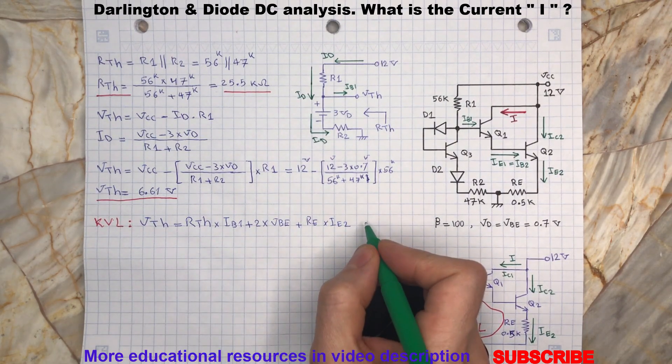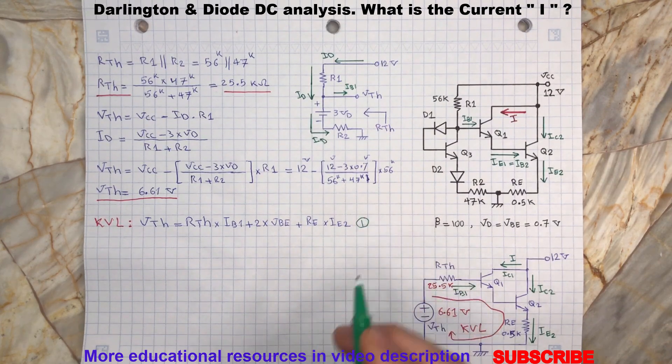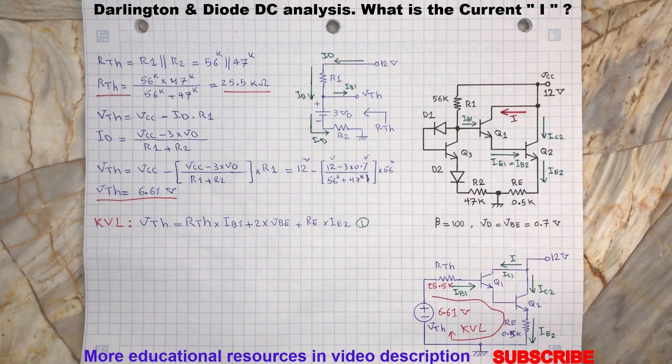IE2 is the current flowing in the emitter of transistor Q2. The relationship between IE2 and IB1 can be determined as shown.